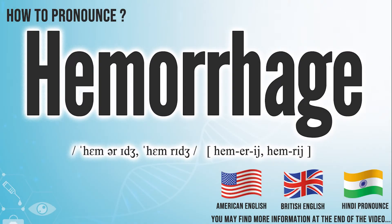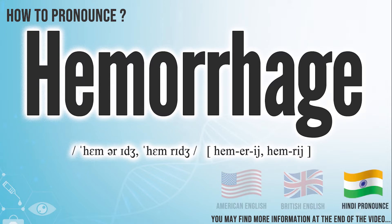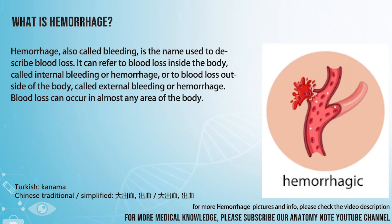Today we will pronounce the word 'hemorrhage.' In American English it is pronounced: hemorrhage. In British English it is pronounced: hemorrhage. In Hindi English it is pronounced: hemorrhage. Hemorrhage, also called bleeding, is the name used to describe blood loss.